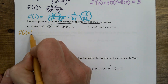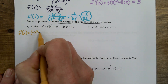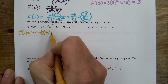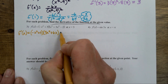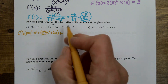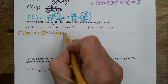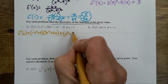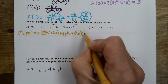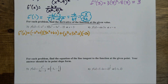So here we go. F prime of x — product rule. The first times the derivative of the second, plus the second d first. Product goes with plus, quotient goes with minus — this is a product because it has two things multiplied together. Plus second d first. Now I'm going to evaluate.